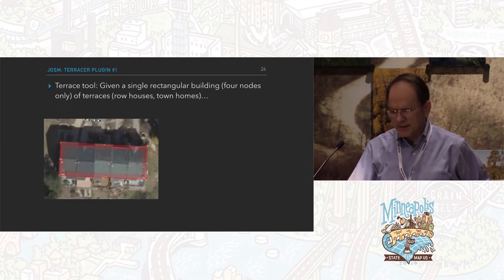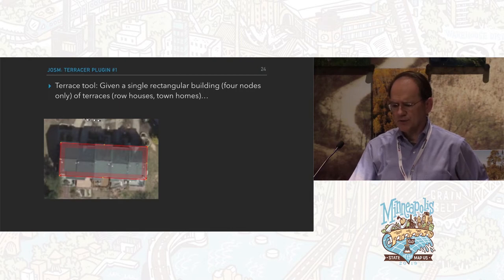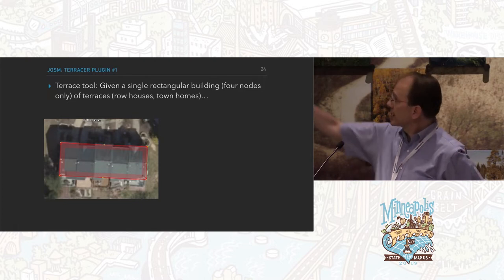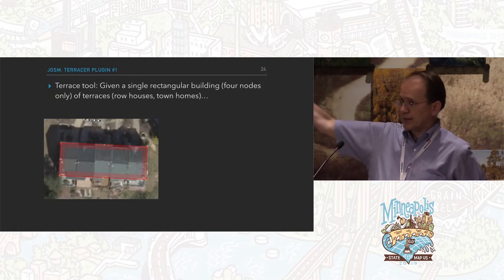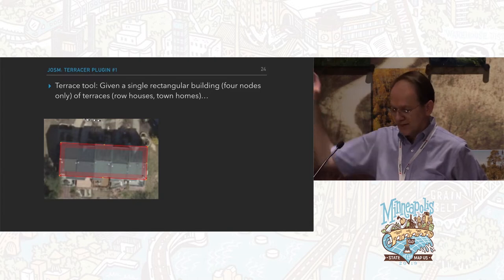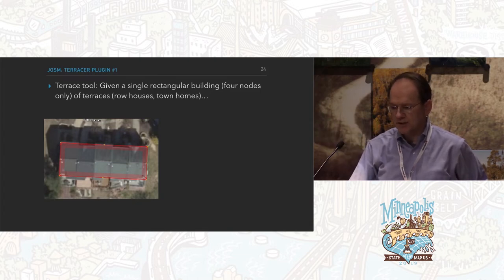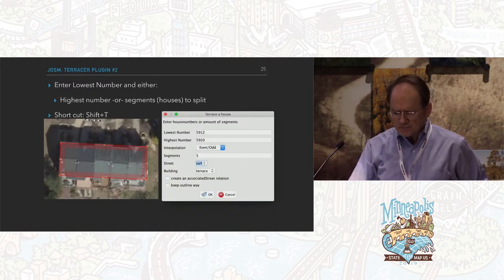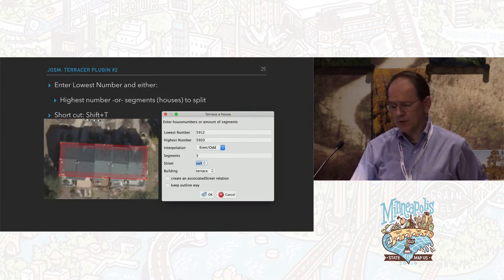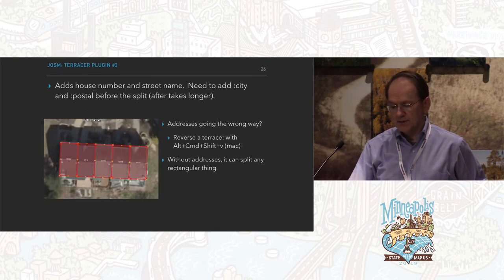Another tool, actually a plugin, is the Terracer — for those who don't speak British, that's a row house or townhome. I start with a perfect rectangle; anything else will make really bad geography. You enter the lowest number and the highest number, or the number of houses in that block, and it splits it into pieces. It's wonderful.